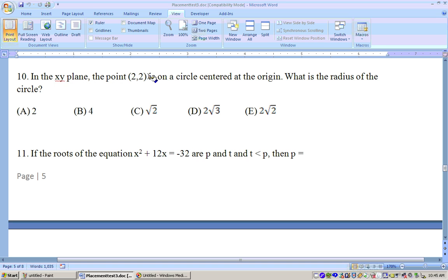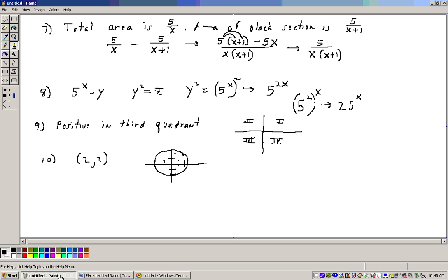Problem 10 says, in the xy-plane, the point 2, 2 is on the circle centered at the origin. What is the radius of the circle? Well, let's take a look at this a second. I drew a circle, and it's centered at the origin, the point 0, 0. And there's a point on the circle at 2, 2. Right here at 2 to the right, 2 up. What is the radius? Well, a lot of people would guess 2, but it's not. The radius is the distance out here. And actually, that's the hypotenuse of a triangle that has a height of 2 and a length of 2.